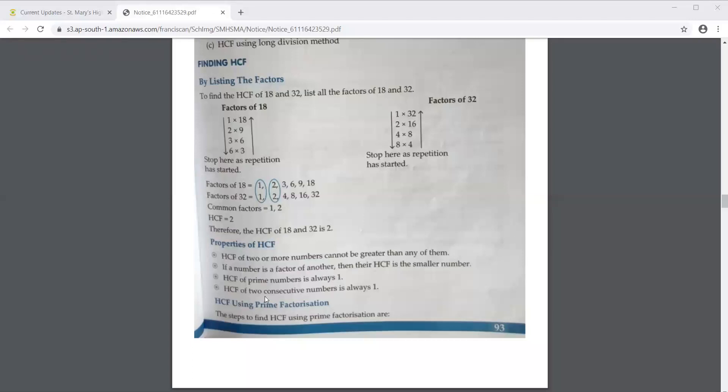Then another thing: HCF of two consecutive numbers is always 1. Consecutive means one after another. Just now I told you, I took 5 and 6. So they are consecutive numbers, 5 then 6. So when you find out the HCF of any two consecutive numbers, it will always be 1.